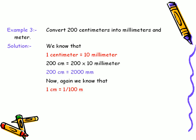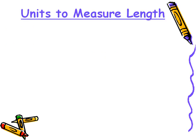Similarly, as we also know that one centimeter is equal to one by one hundred meters, so two hundred centimeters would become two hundred times one by one hundred meter, which would be equal to two meters.